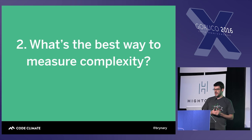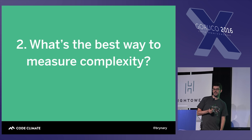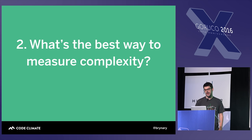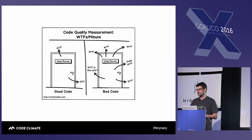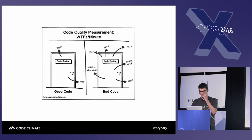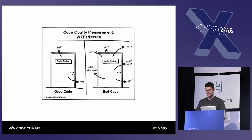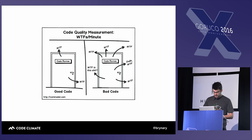The second question is: what is the best way to measure the complexity of code? Suppose we've identified that maintainability and complexity are the goals — how could we actually measure that with our code base to determine we're moving in the right direction? The oldest and most famous measurement of code complexity is WTFs per minute. On the left side, there's a code review going on and the code is of high quality because the reviewers are only swearing a little bit. On the right side, that code review is going much less well.